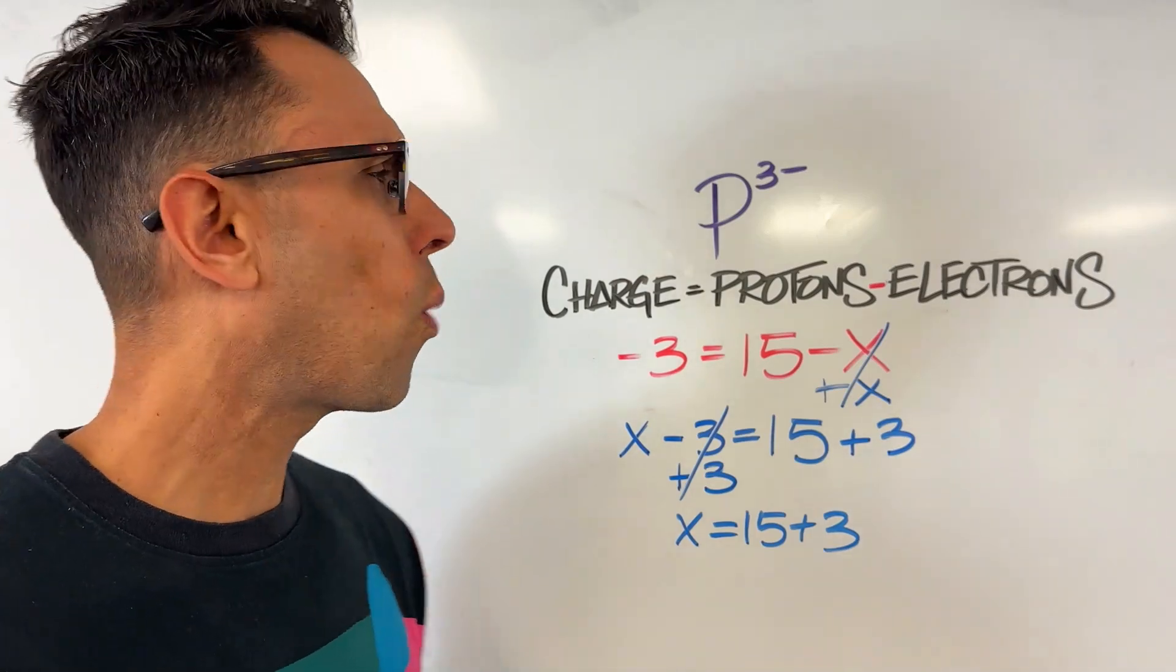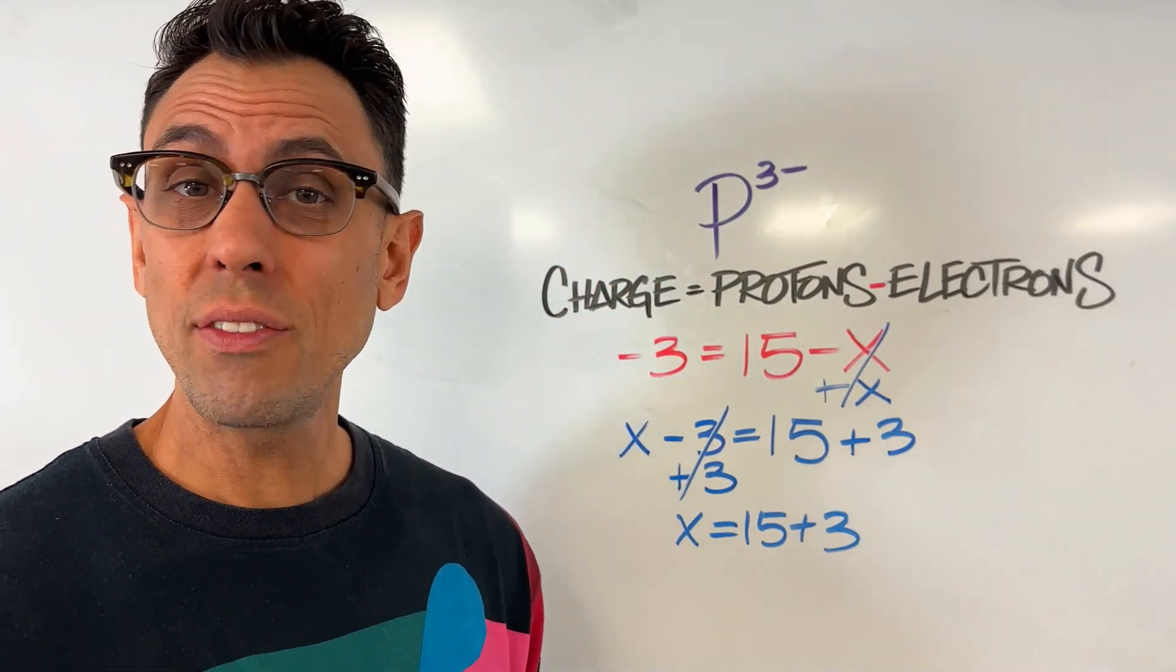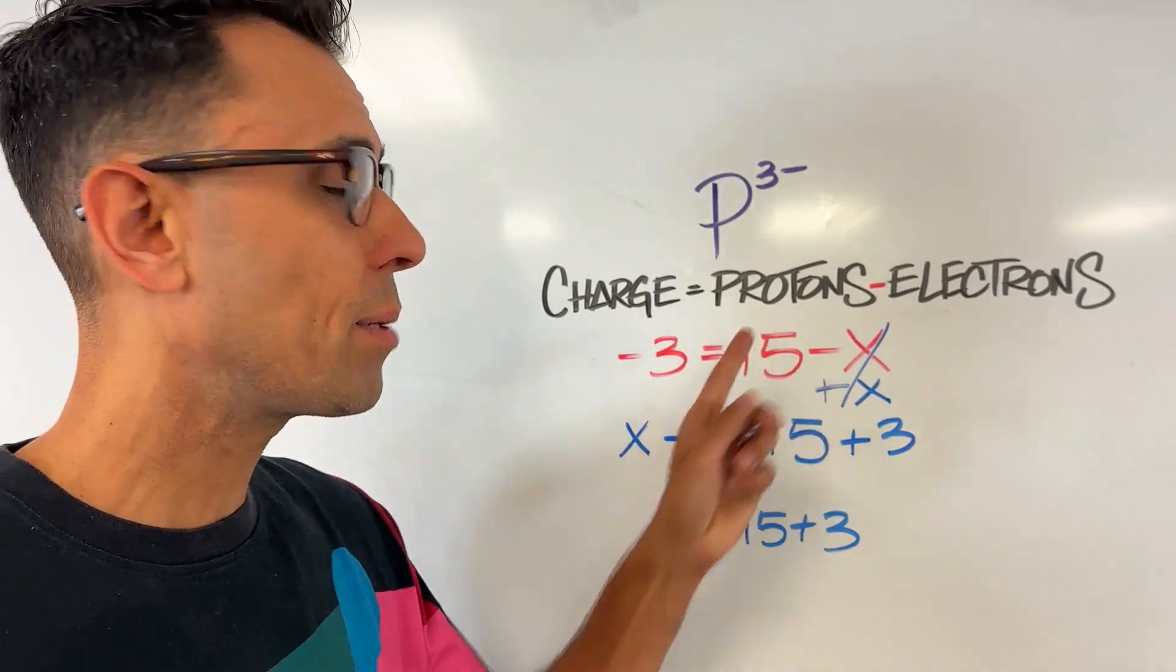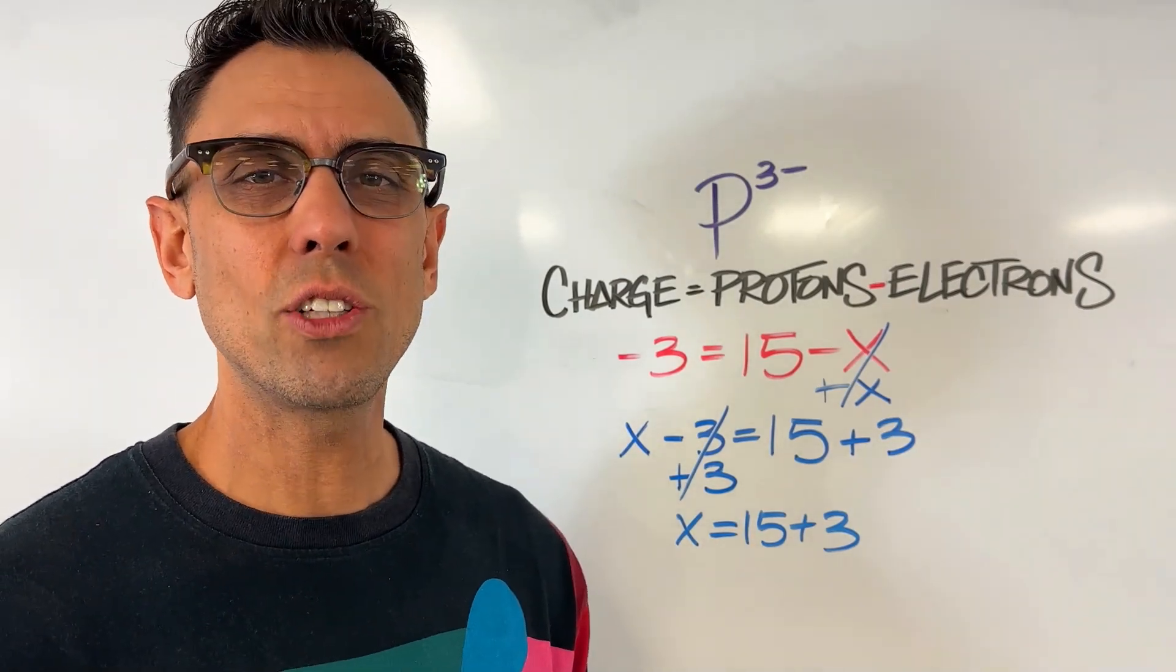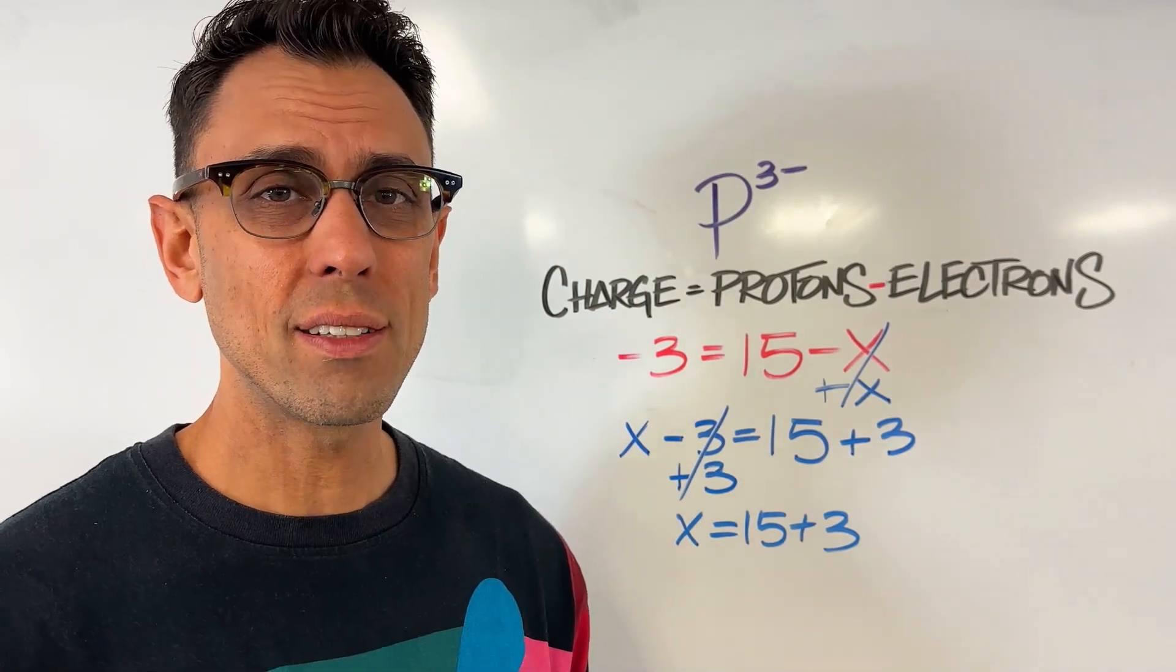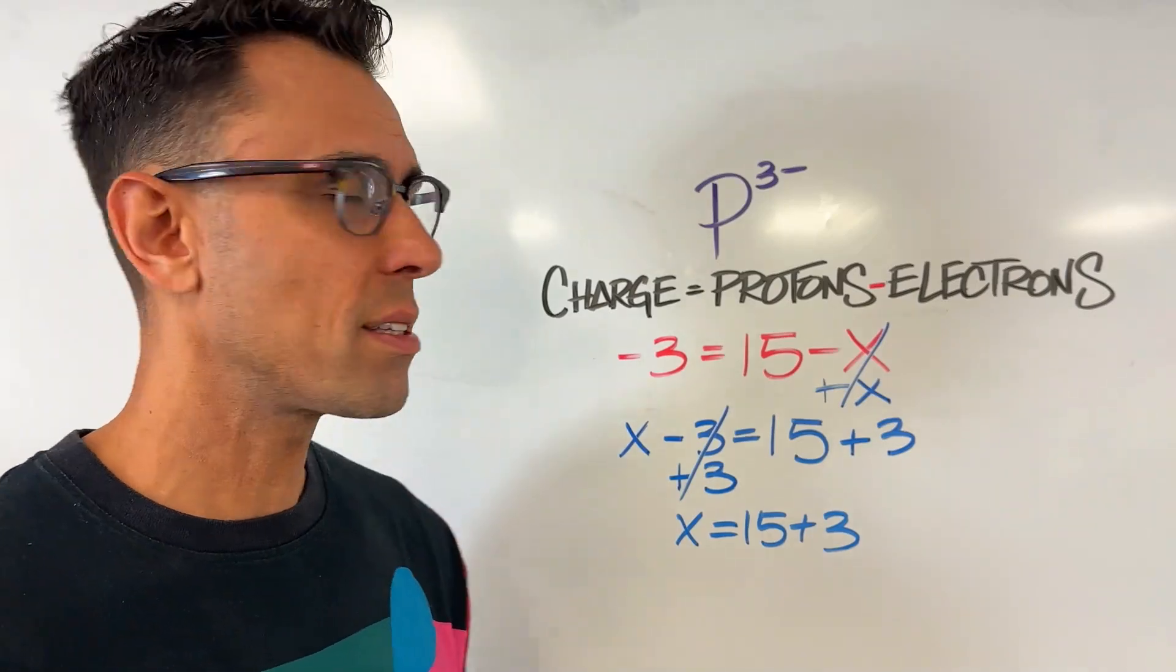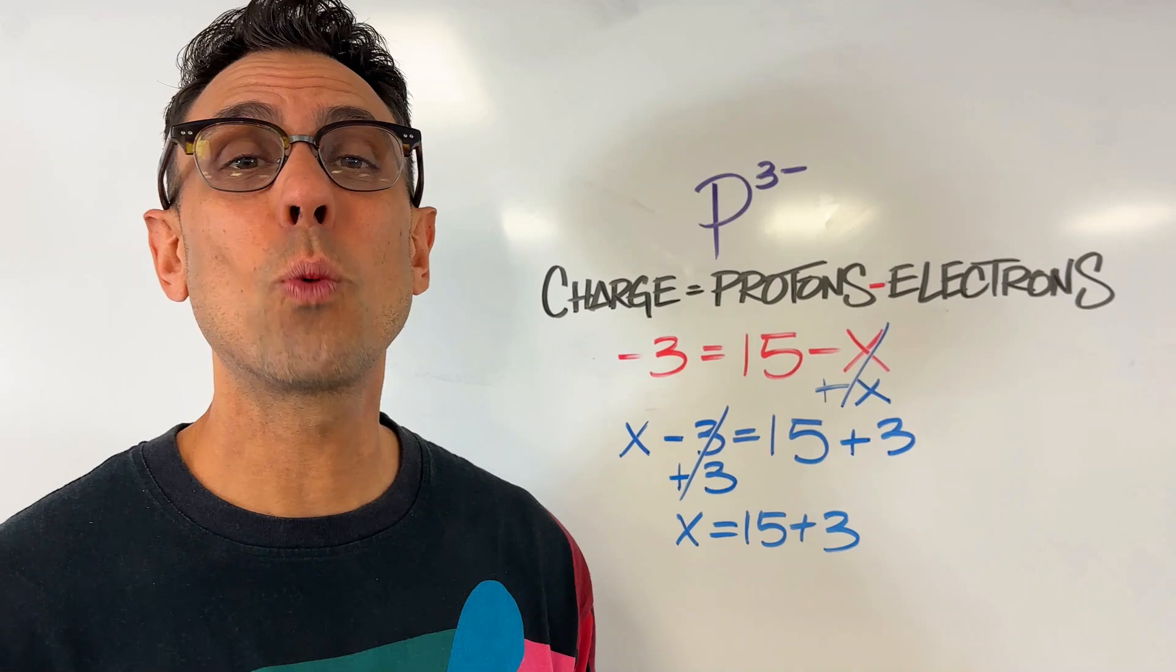That also explains why it's got a negative 3 charge. You see, if there's 18 electrons, and they're all negatively charged, but there's only 15 protons, and they're positively charged, there are more negatively charged particles. In fact, there are 3 extra electrons that do not have a positive partner to cancel them out, and it's those 3 extra electrons that leaves us with a negative 3 charge. Okay, let's do one more example together.